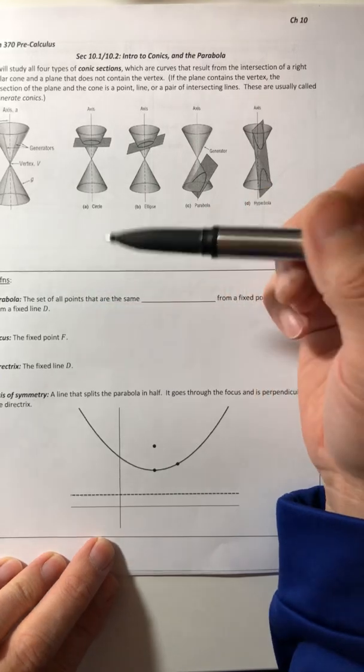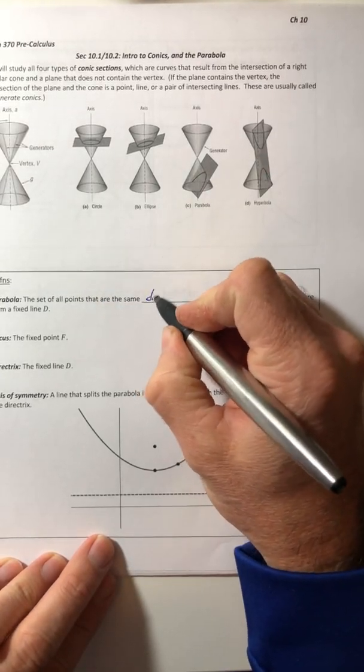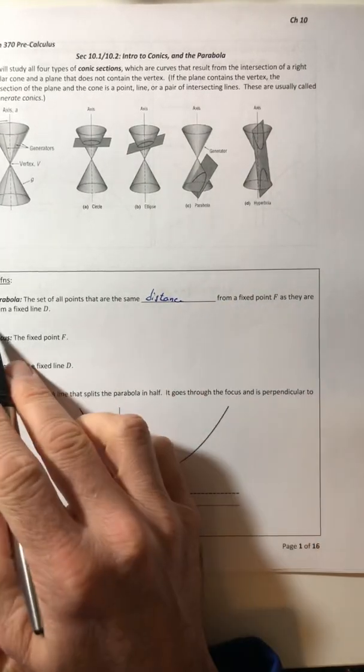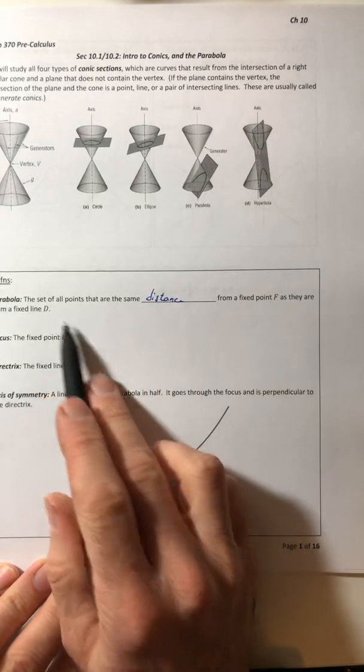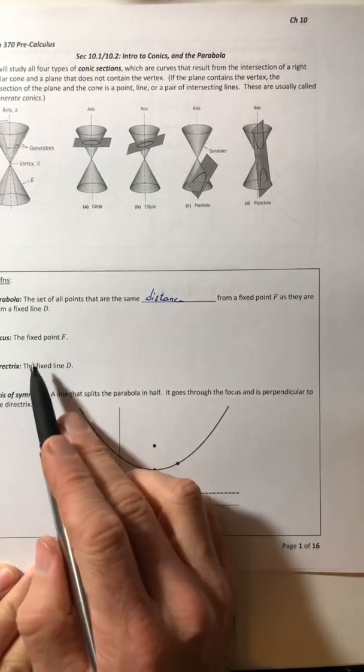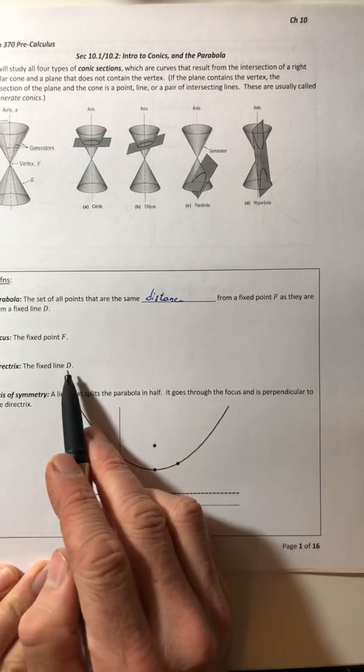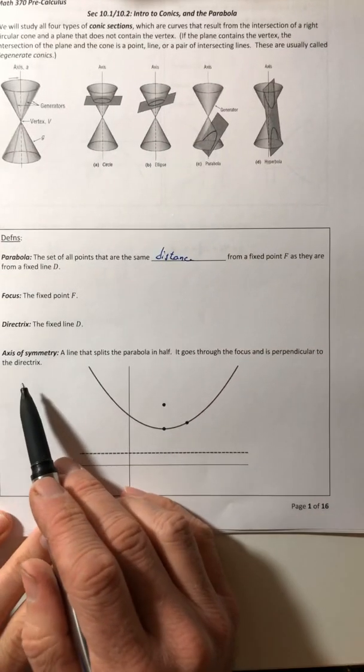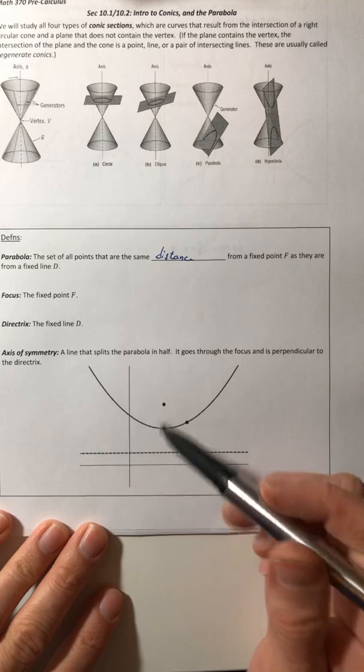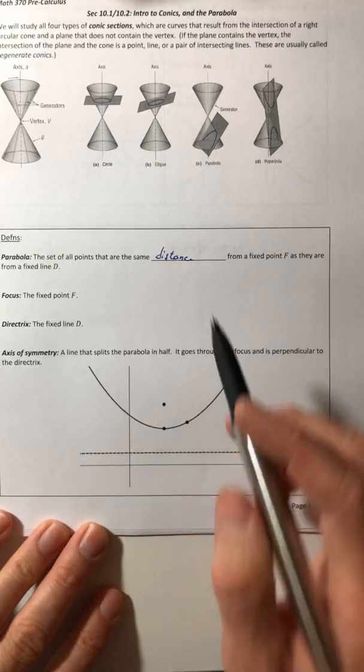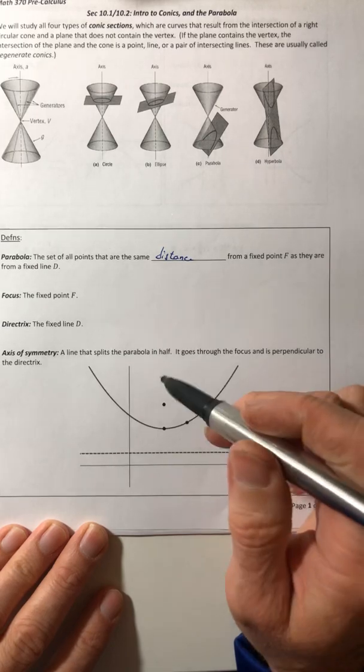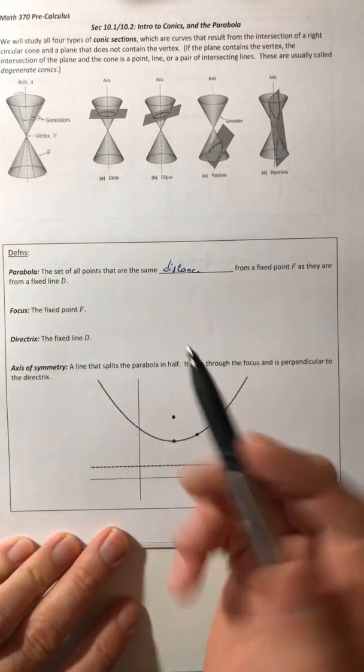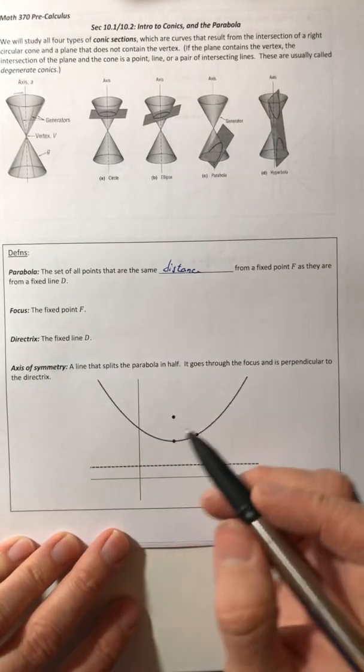So a parabola is the set of all points that are the same distance from a fixed point F as they are from a fixed line D. So that fixed point F, that's called the focus and the fixed line D, that is the directrix. And then we also have an axis of symmetry and that just splits the parabola into two equal halves. And it goes through the focus, the vertex and is perpendicular to the directrix. Okay, so that was a lot of definition mathy stuff. So let's kind of visualize what they're talking about.